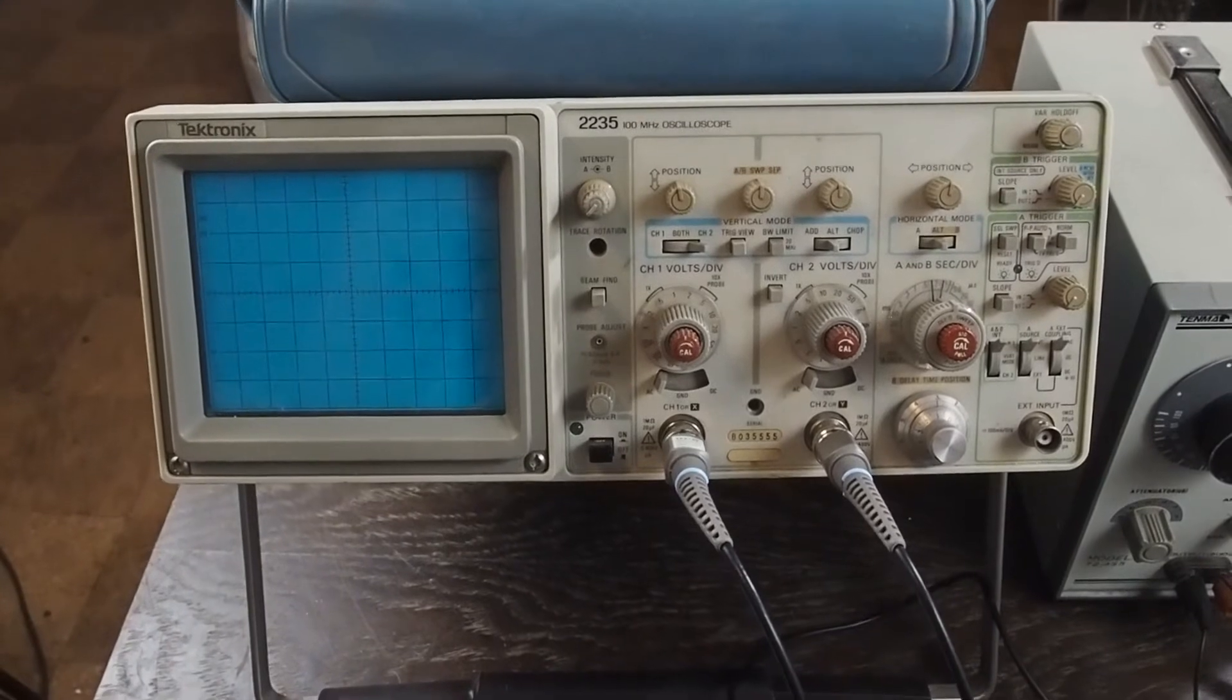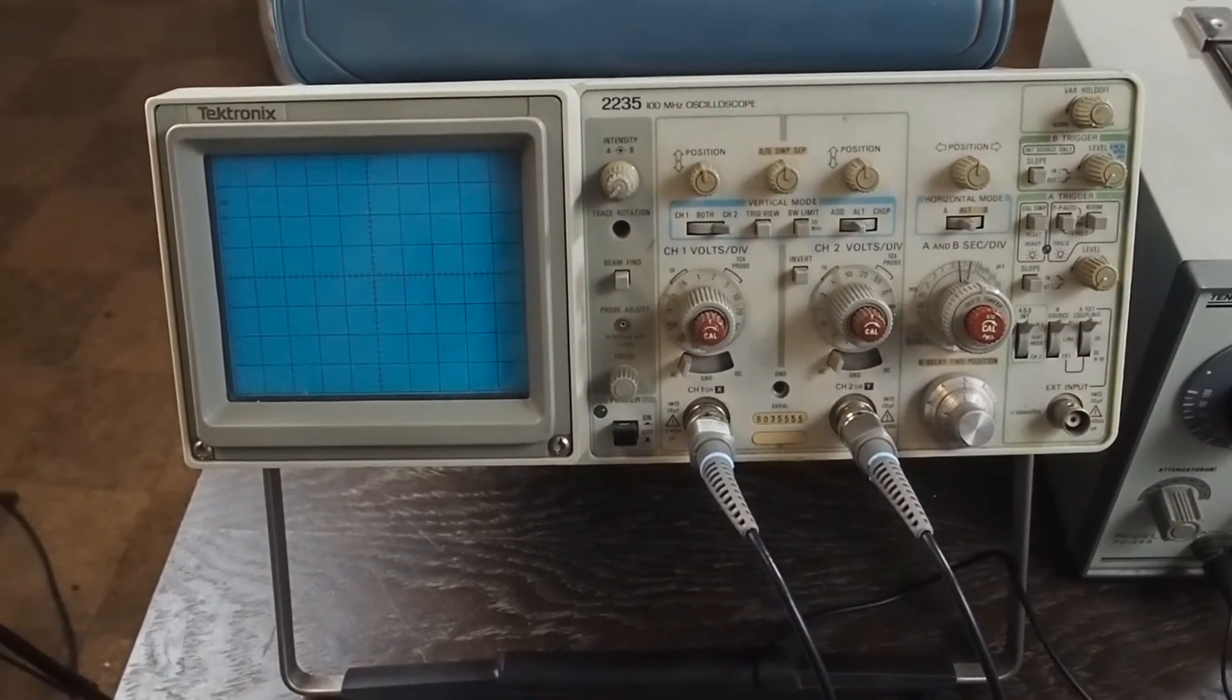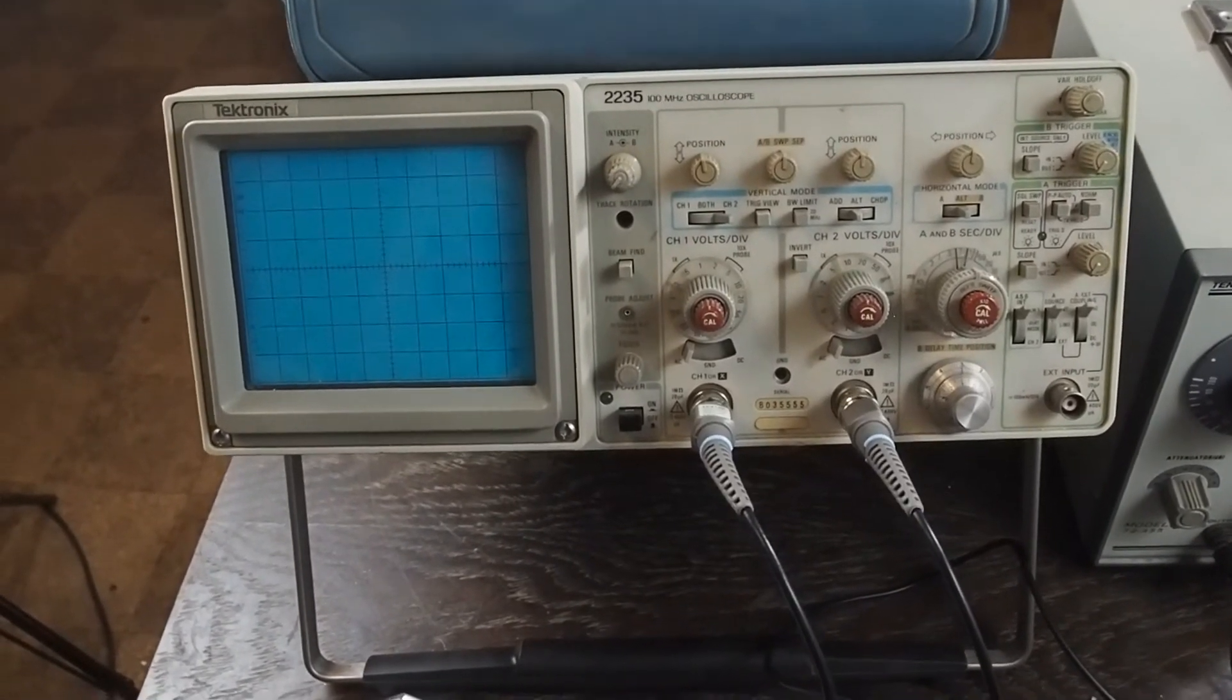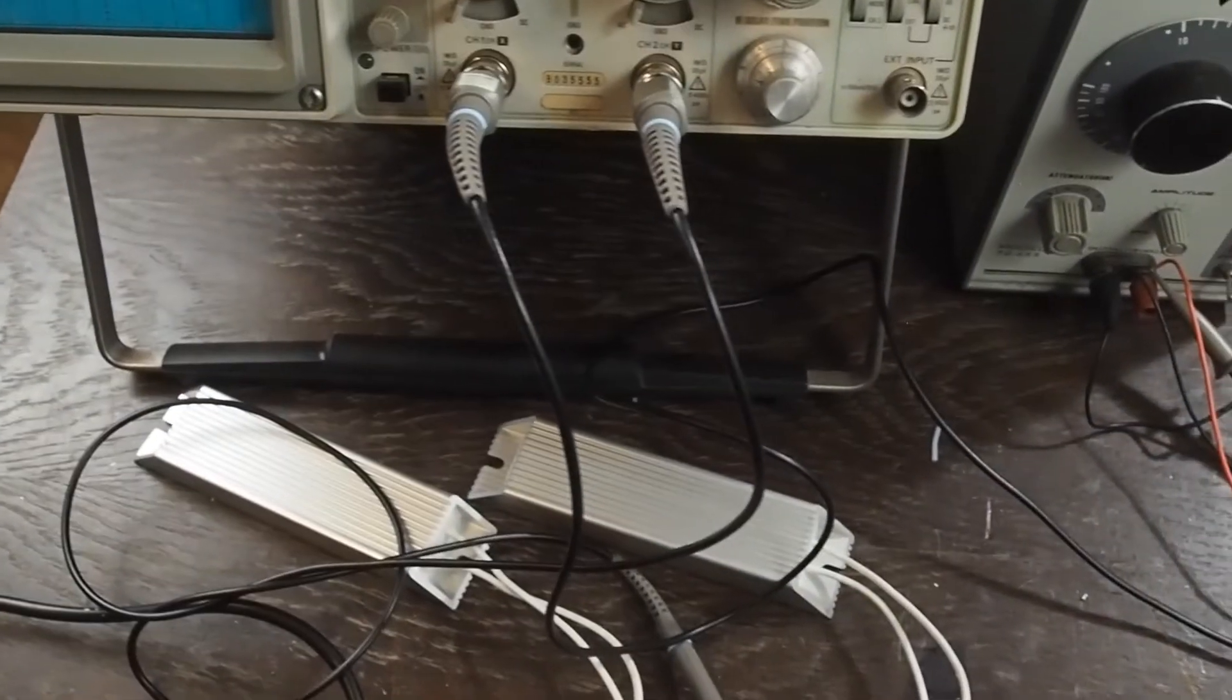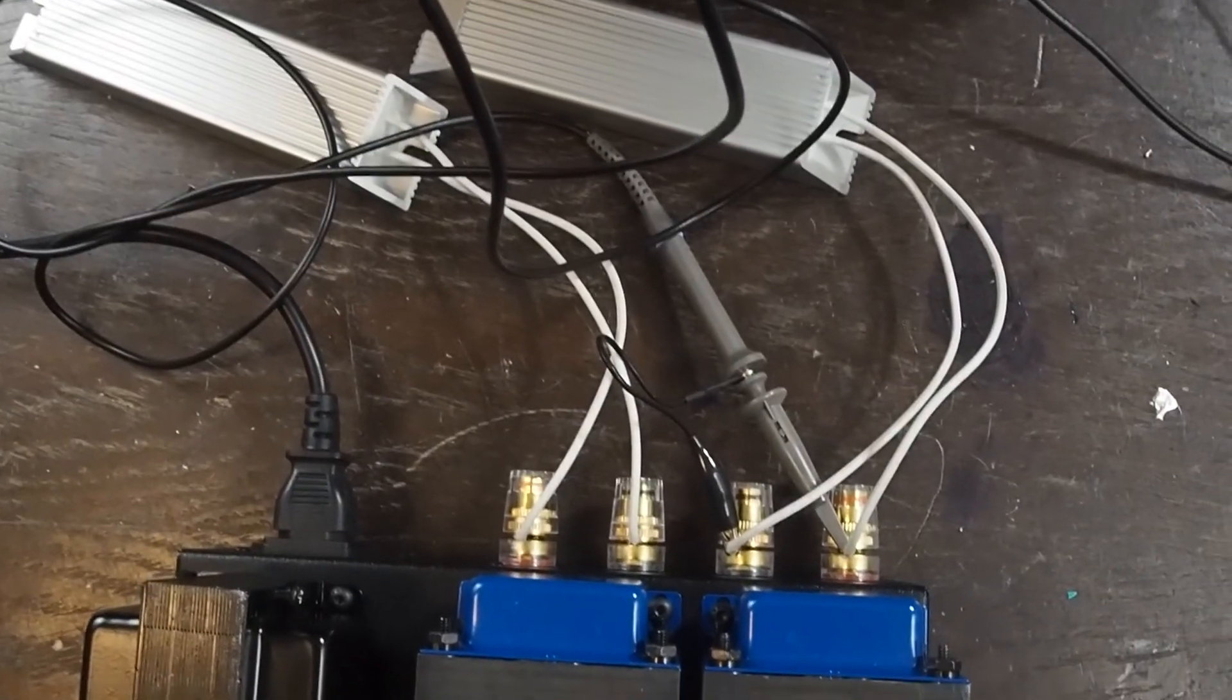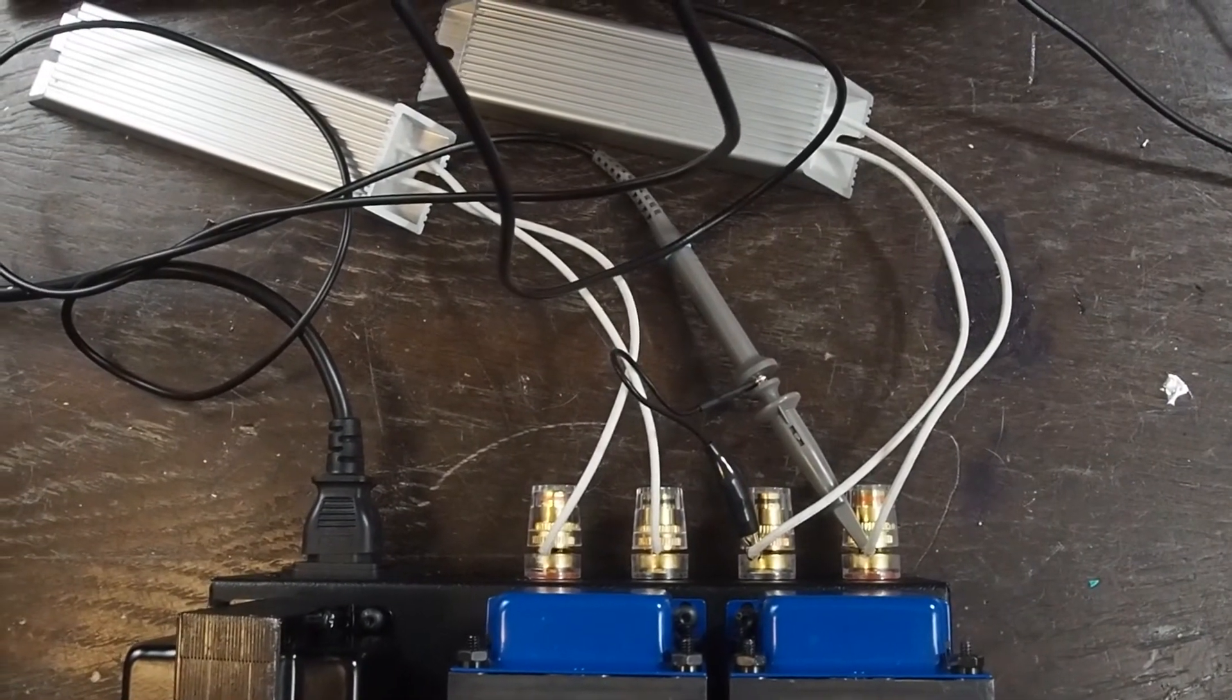This is my old Tektronix 2235. It's a dinosaur scope I've had for a long time, but it works really well with a tube amplifier. The probes are some little cheapies that I got off eBay, and you can see they're connected to the right channel of the amp.